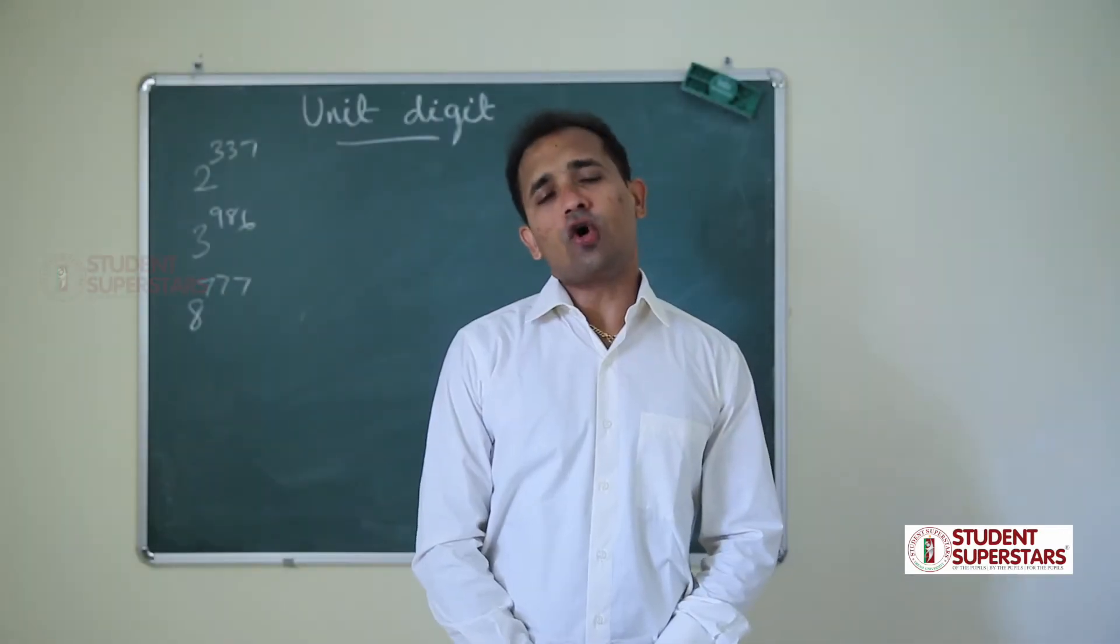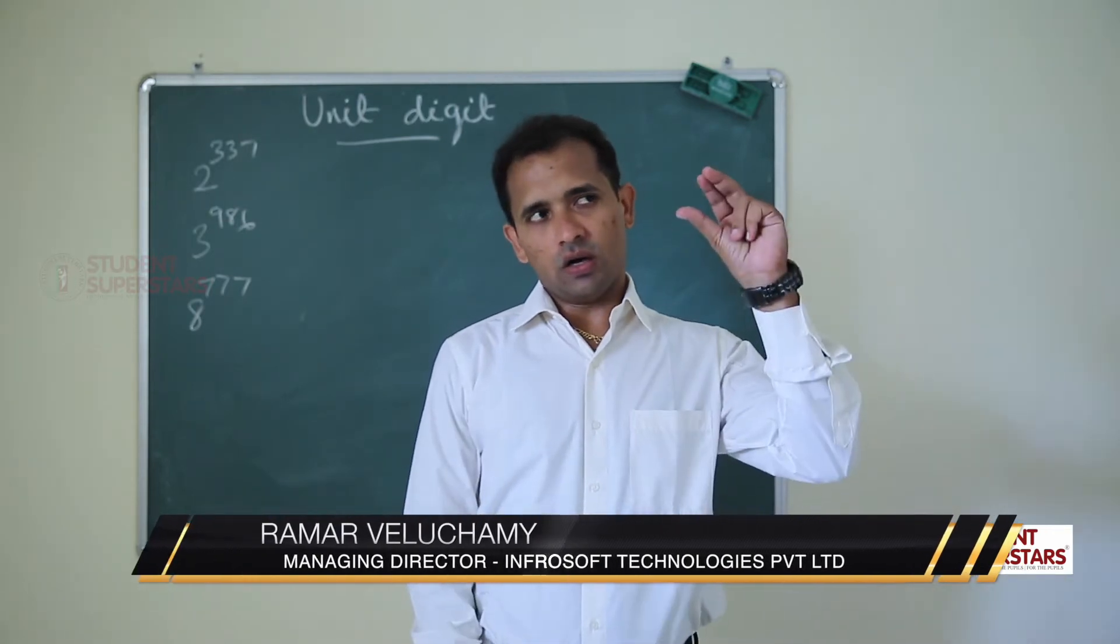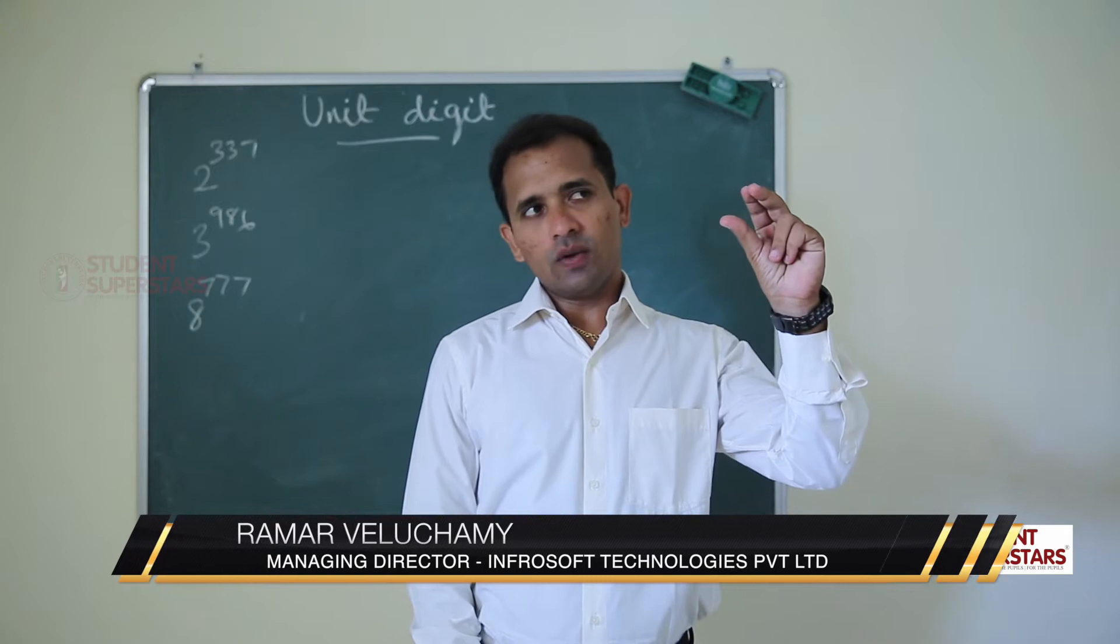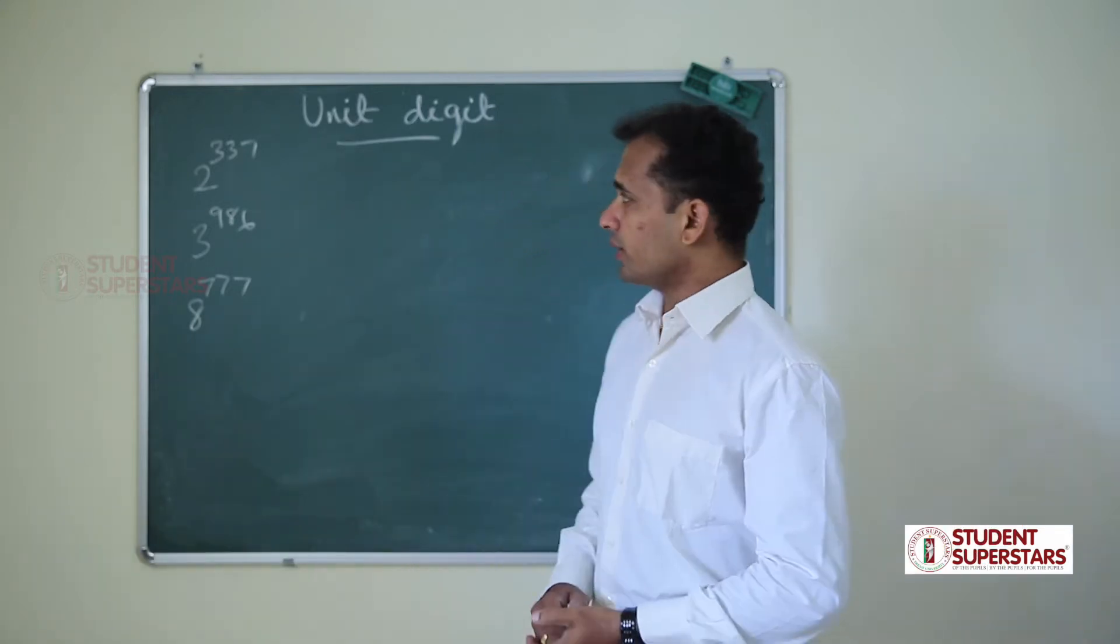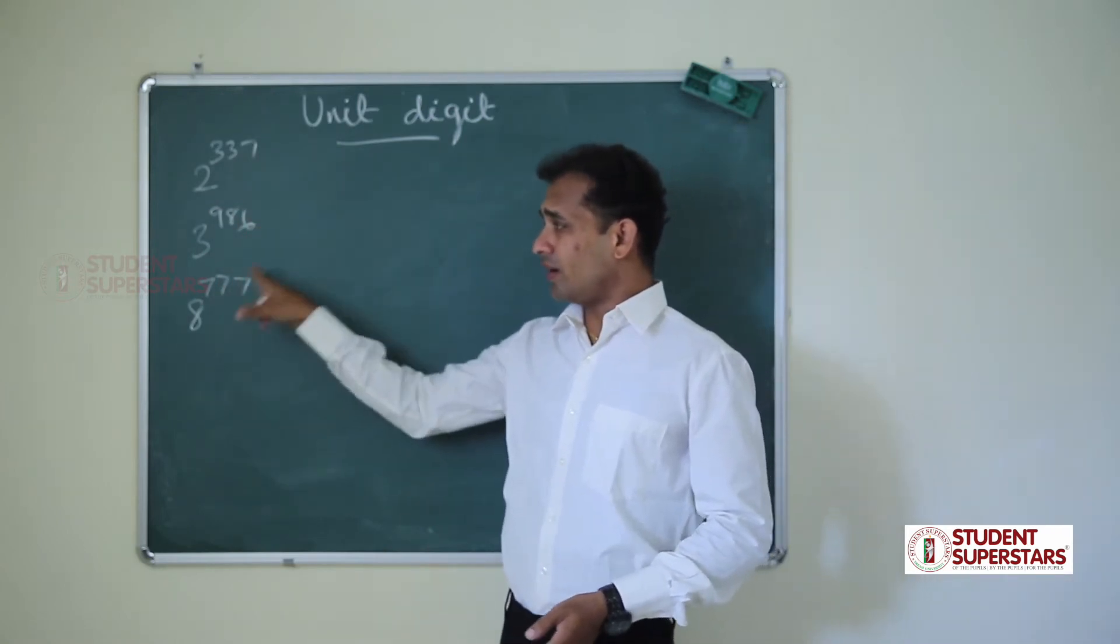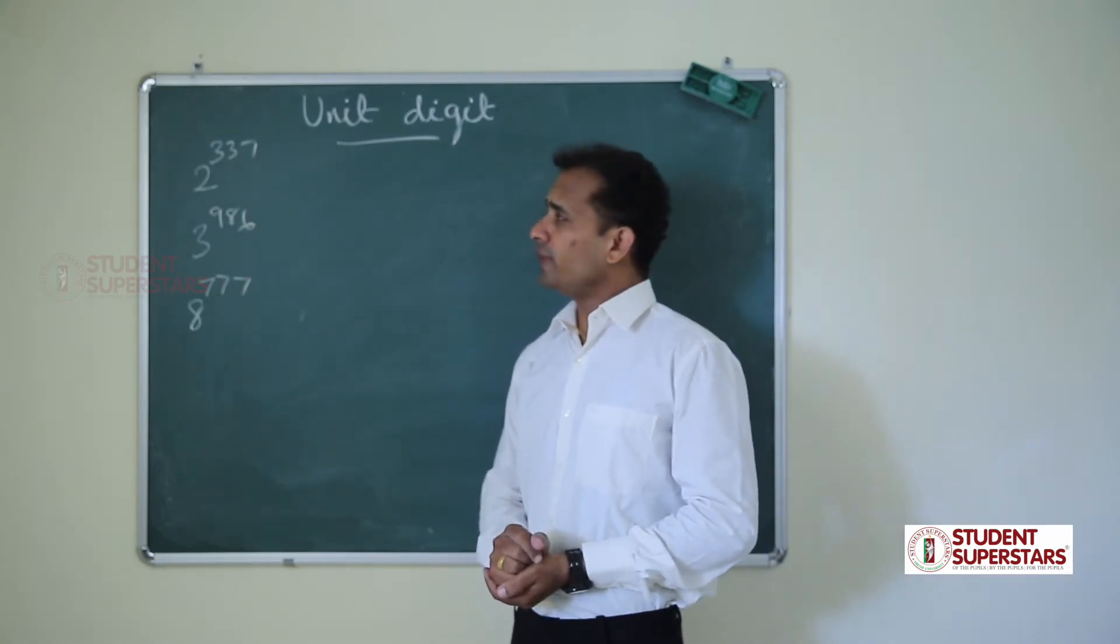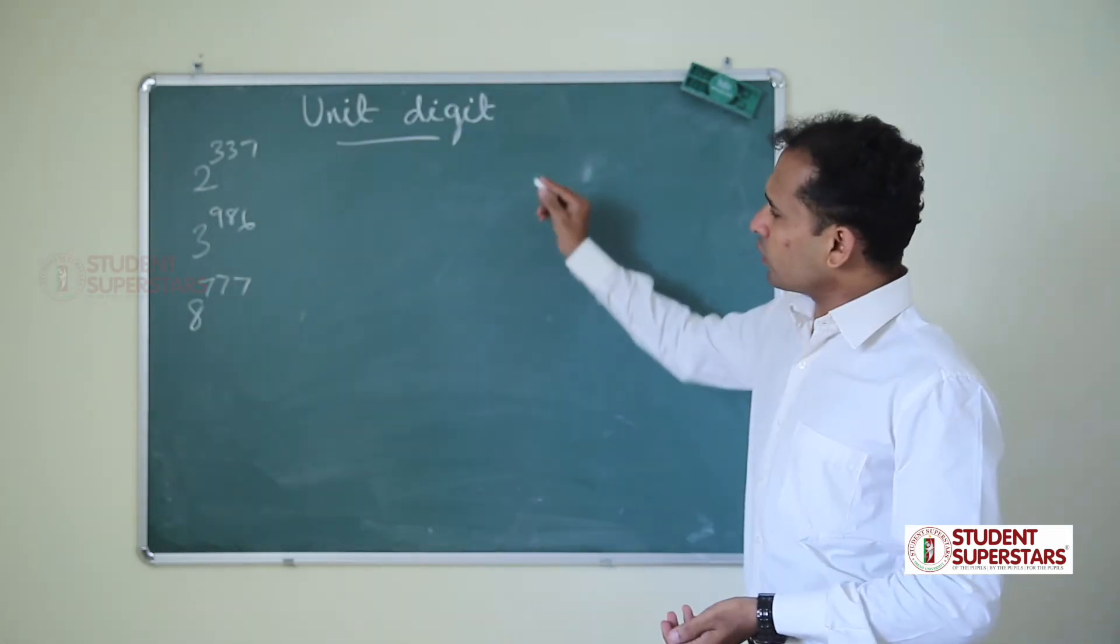In this video, we are going to solve problems on unit digits. They give a number which is some power, and we should find the unit digits. Here, there are 2 power 337, 3 power 986, and 8 power 777. Before that, we will find the unit digits for different numbers. How to calculate?